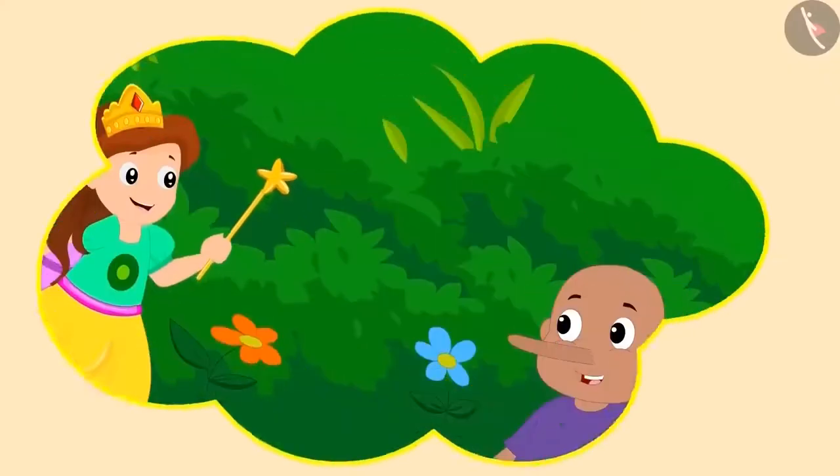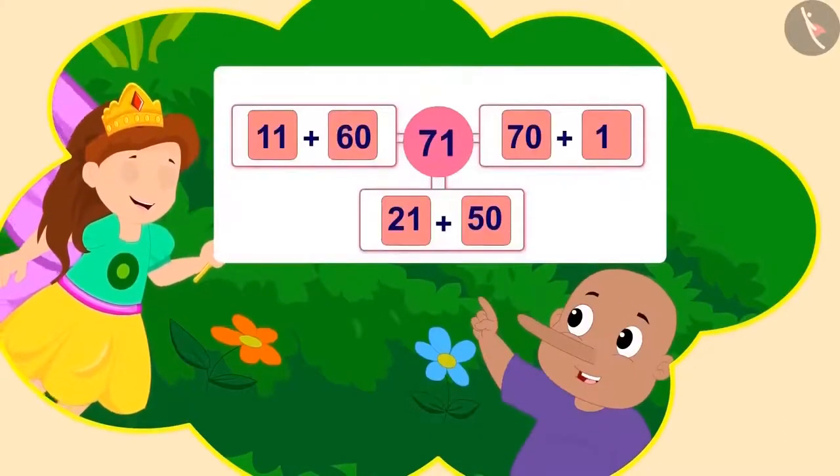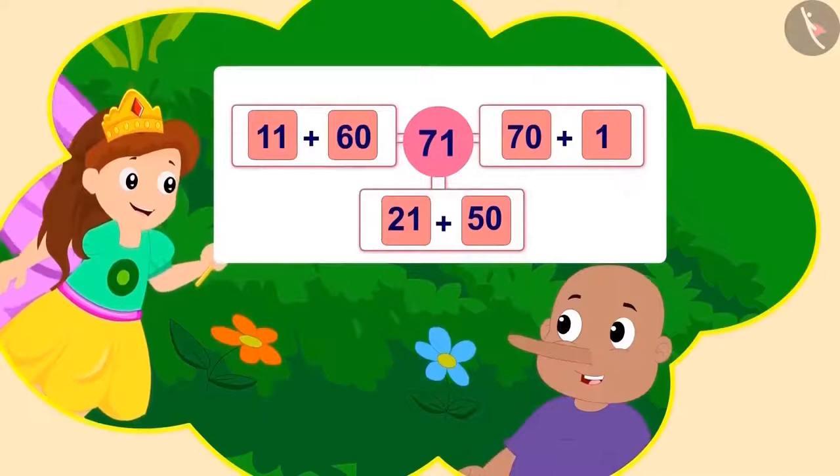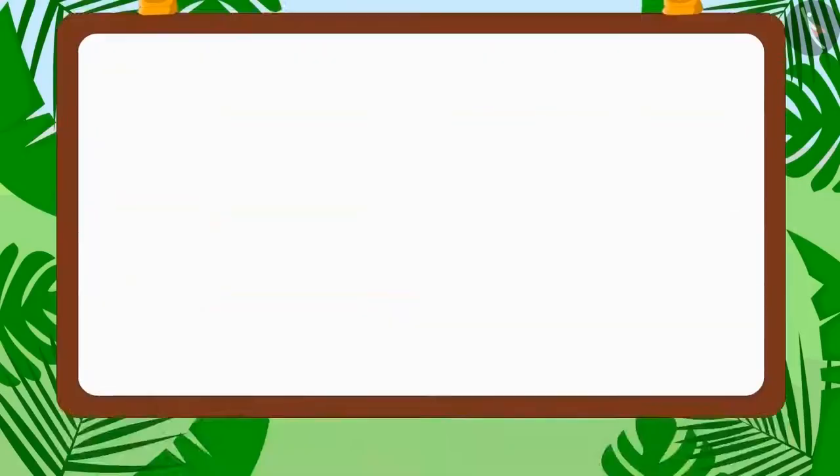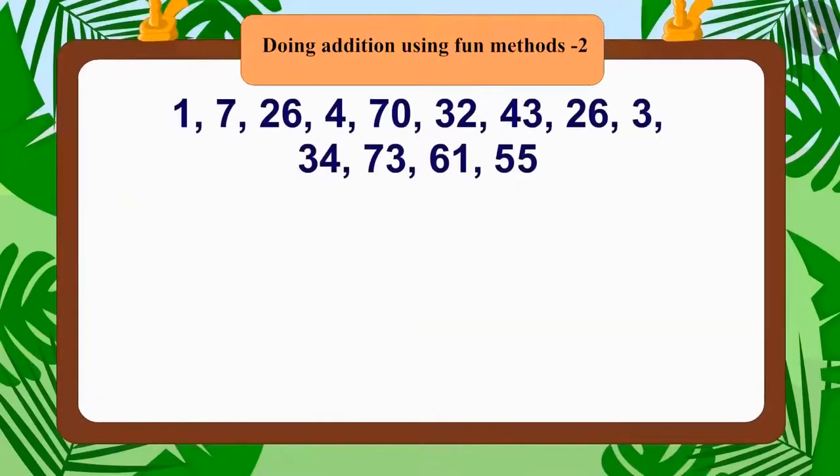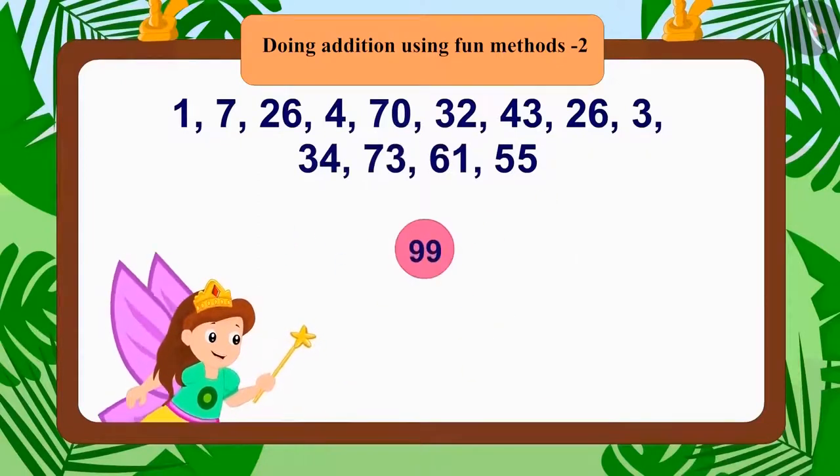At night, Bablu showed Chanda's answers to the angel. Chanda's answers were correct. The angel made Bablu's nose slightly small. This time she asked him to make 99 in three different ways. But this time he can take only three numbers at a time.